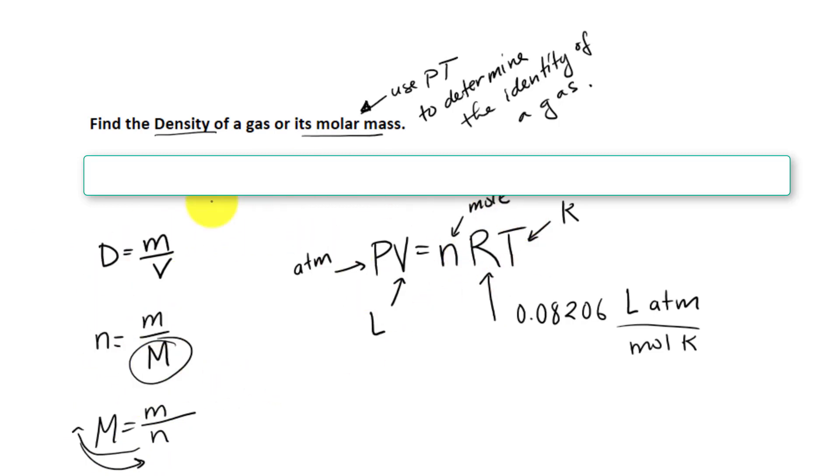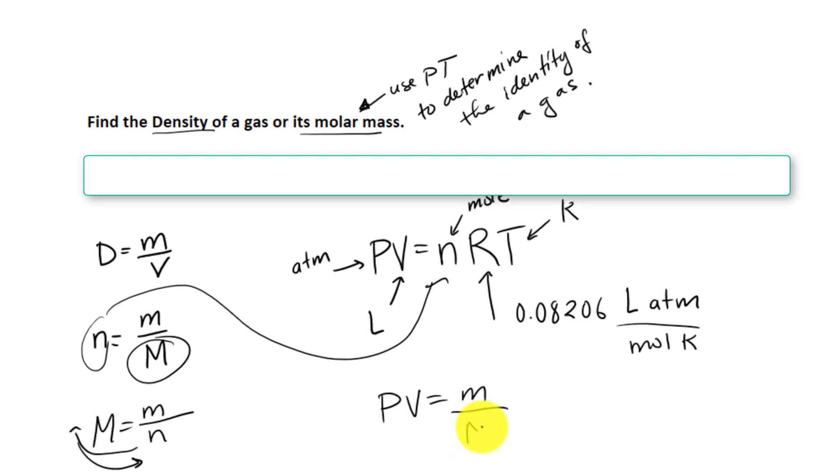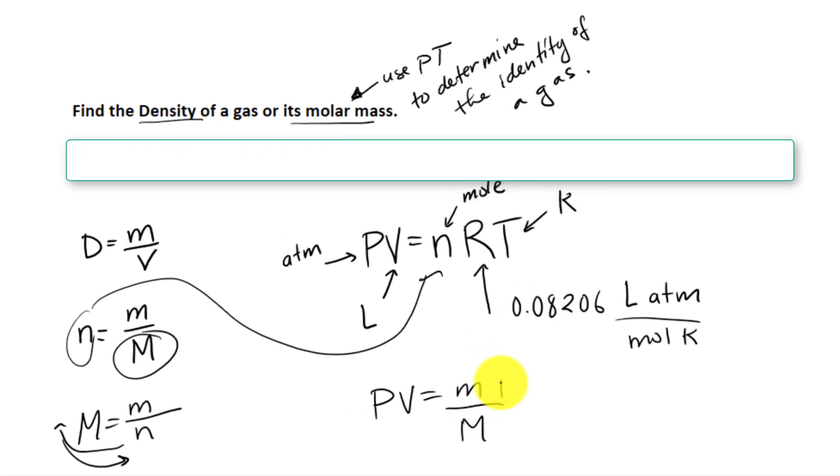Now, if we look at all three of these equations, can we substitute in what we know? First of all, this n can be substituted in here. So now we have PV equal to mass divided by molar mass times RT.